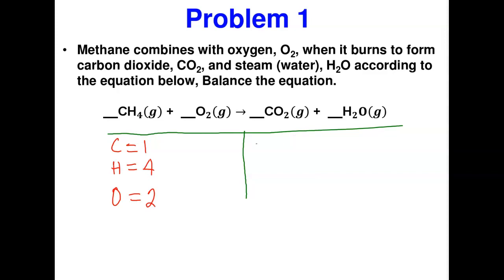On the right side, carbon is 1 and hydrogen is 2. For oxygen, I treat it algebraically — there is two oxygen in CO₂ and one oxygen in H₂O, so I write it as 2 + 1 rather than summing to 3. This algebraic approach is more helpful as we begin balancing. I balance carbon first — one on each side, it's balanced.